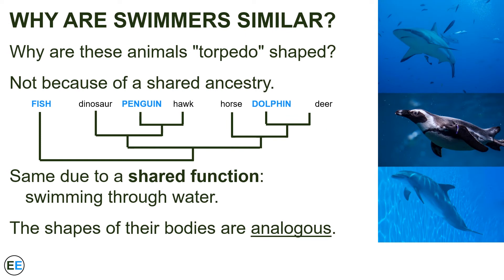Looking at a more biological example, we can ask why swimming animals are often so similar in the shape of their body. They are said to be torpedo-shaped, named after an object that travels quickly through water. Their bodies are not the same shape because of shared ancestry — a phylogeny depicting the evolutionary relationships of fish, penguins, and dolphins shows they would not have inherited the same body shape from their ancestors, because the ancestors of penguins and dolphins lived on land and would have looked very different. In this case, their body shapes are due to a shared function: reducing drag for an organism pushing its way through water. The shapes of the bodies of these organisms are analogous — similar because of current function.